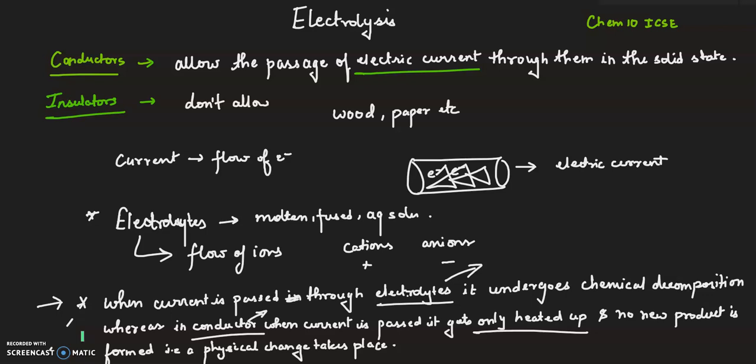Let's begin with conductors. Conductors allow the passage of electric current through them in the solid state. In the case of insulators, they do not allow the passage of electric current through them.